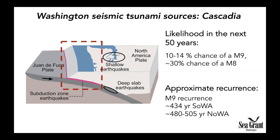Recurrence is calculated by dividing the amount of time by the number of earthquakes. It gives you an average idea about how often these things reoccur, but it doesn't tell you exactly how long it is between each earthquake.